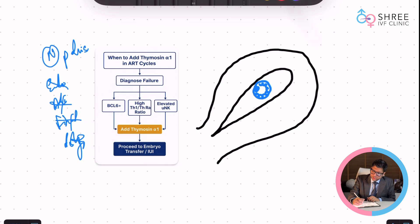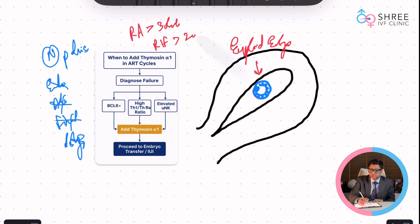Second, this embryo which we want to put has to be a euploid embryo preferably. That means you need to make sure that the embryo has been ideally genetically tested, especially because most of the patients whom you treat would have had more than three abortions at least or would have had IVF failures more than two cycles.